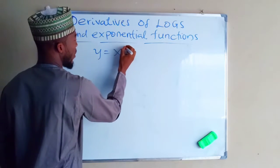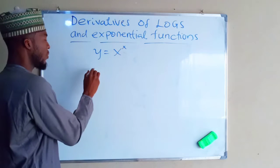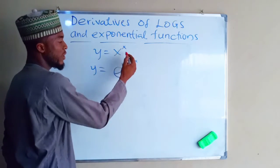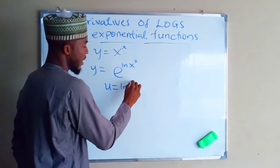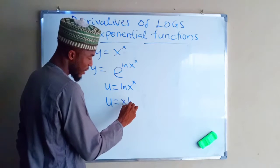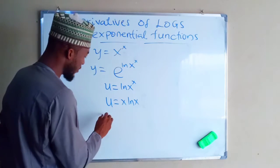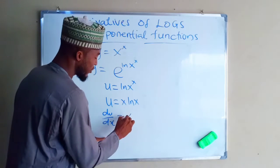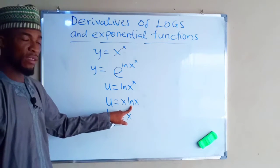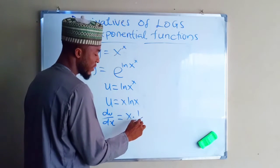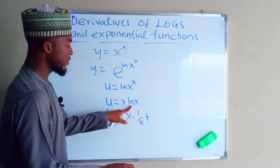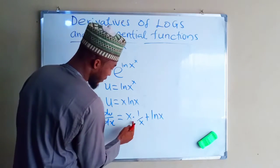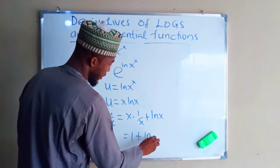If y equals x^x, how do we handle this? We apply the same principle: y equals e^(ln(x^x)). Let u equal ln(x^x); by the law of logarithms, u equals x·ln x. Then we differentiate u with respect to x using the product rule: keeping x constant, we differentiate ln x to get 1/x, then keeping ln x constant we differentiate x to get 1, giving du/dx equals 1 plus ln x.